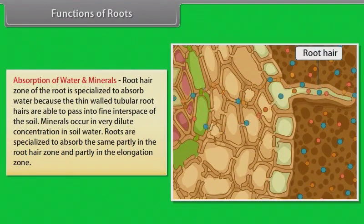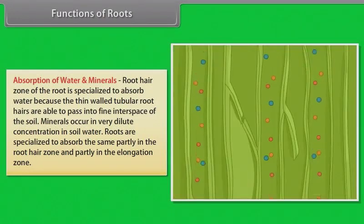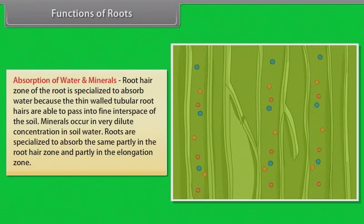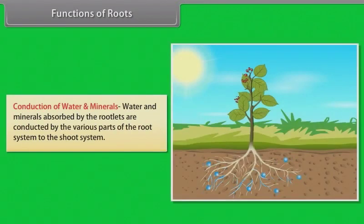Minerals occur in very dilute concentration in soil water; roots are specialized to absorb them, partly in the root hair zone and partly in the elongation zone. Conduction: Water and minerals absorbed by the rootlets are conducted by the various parts of the root system to the shoot system.